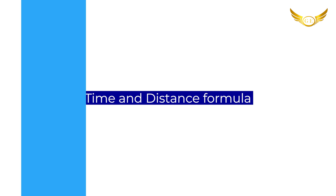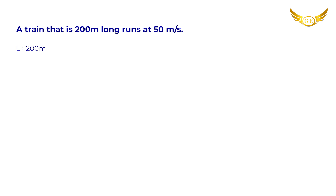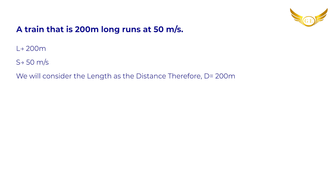Now for the second type: simple questions based on the time and distance formula. As we know, Speed = Distance ÷ Time. The question is: a train that is 200 metres long runs at 50 metres per second — find the time. Using the formula, 50 = 200 ÷ T, so T = 200 ÷ 50 = 4 seconds. That was a simple question based on the Speed, Distance and Time formula.